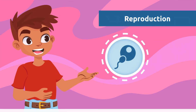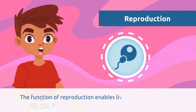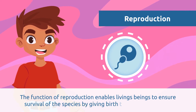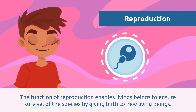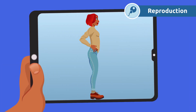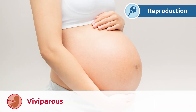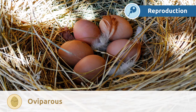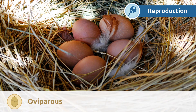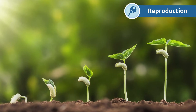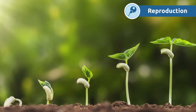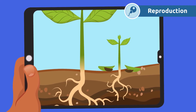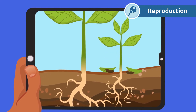The function of reproduction enables living beings to ensure survival of the species by giving birth to new living beings. In the animal kingdom, we classify living beings as viviparous animals, born from their mother's womb, and oviparous animals that hatch from eggs. Another example would be certain plants whose fruits or seeds fall on the ground and put out shoots for new plants of the same species to grow.